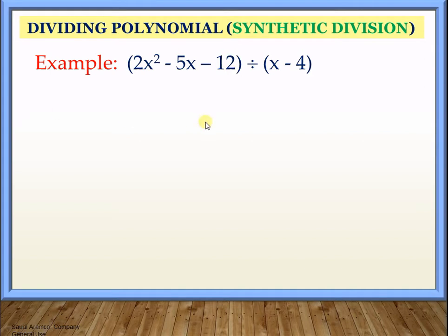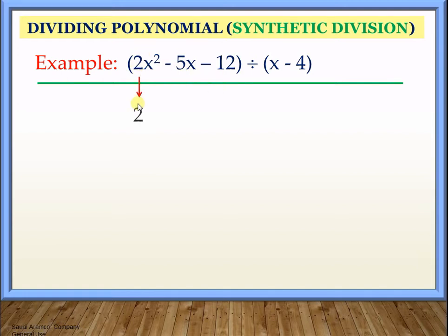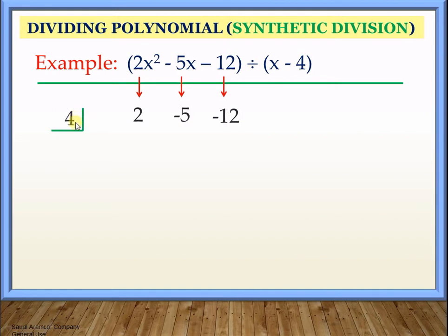If we already have that, all we need to do is copy the numerical coefficient of each term. So in this one, we have the 2, the second one we have negative 5, and the third one we have negative 12. Now we're going to focus on the divisor. You will see it has minus 4, but when we write it here, it should be positive 4. Just take the opposite of the sign.